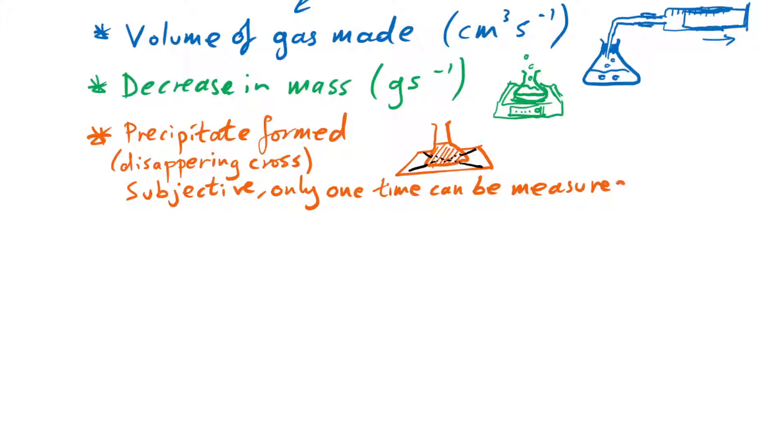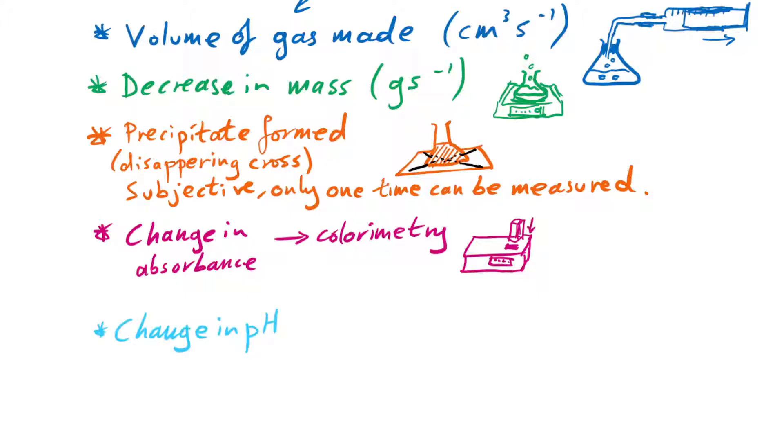This one isn't fantastic though, because it's subjective. When does it actually disappear? And that's only one time that we measure at as well. We also have change in absorbance - that's our colorimetry. If you want to see this kind of reaction done in real life, then click on the card and you'll see Mrs. P doing that for Marsbury Science. And finally, we can measure the change in pH over time.